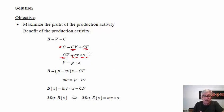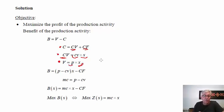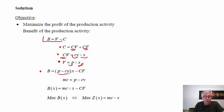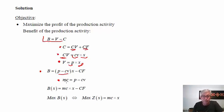If we increase X, the variable cost CV increases; if we decrease X, CV decreases. Similarly, sales equal price multiplied by quantity produced. We can identify the difference between price and unit variable cost — this is called the unit contribution margin, or simply the contribution margin. The contribution margin is the difference between the price and the unit variable cost.